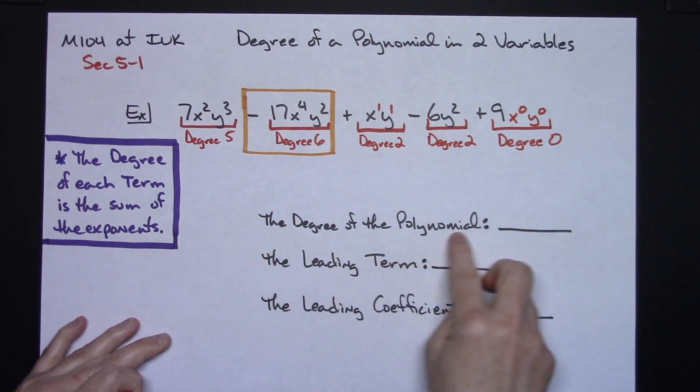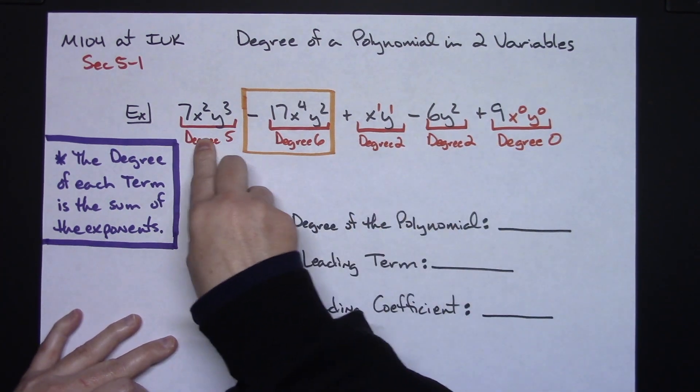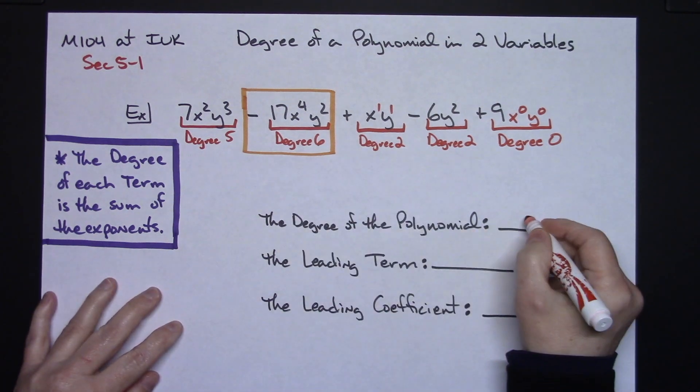So this is the degree of the polynomial. I pick the highest degree, which is six.